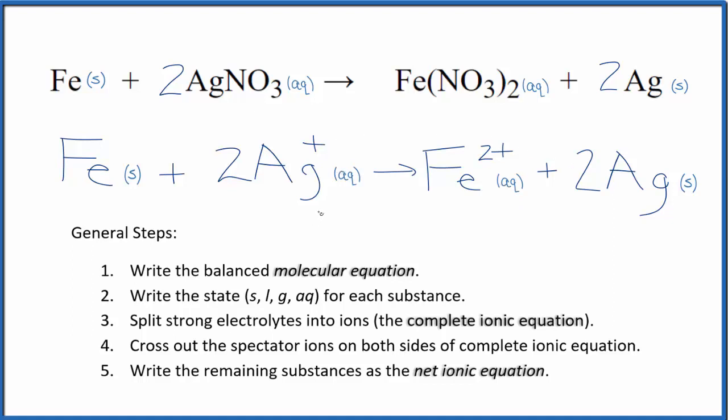If you count the atoms up, they're balanced as well. This is Dr. B with the balanced net ionic equation for iron plus silver nitrate. Thanks for watching.